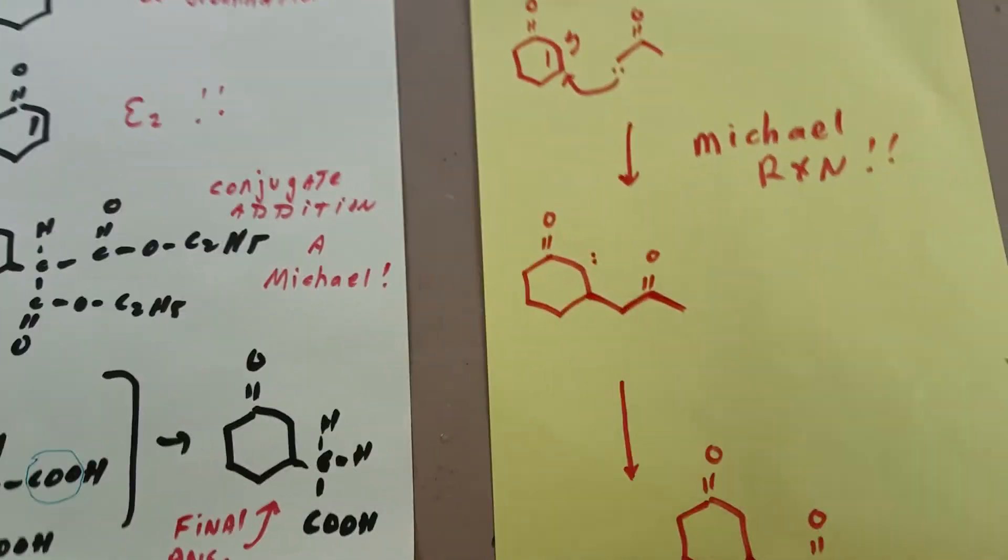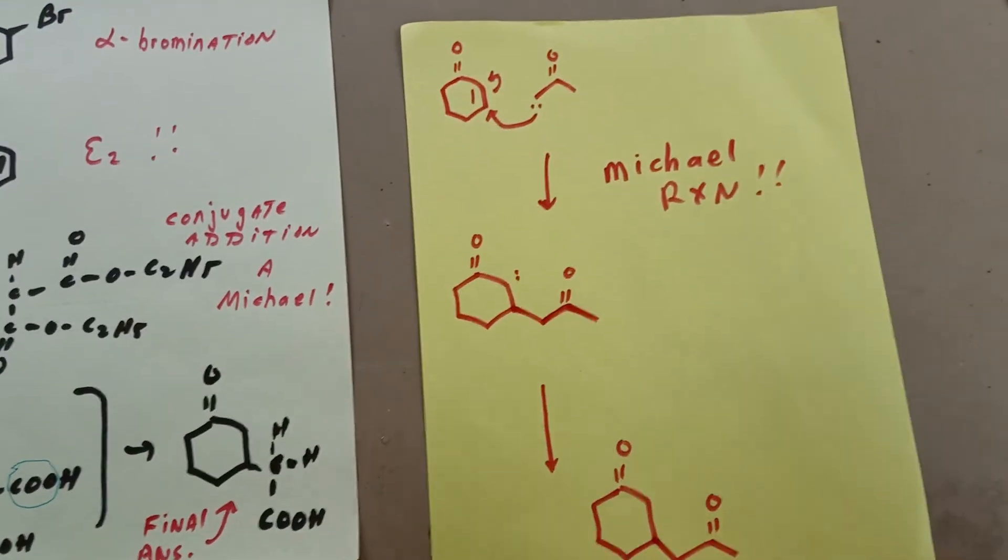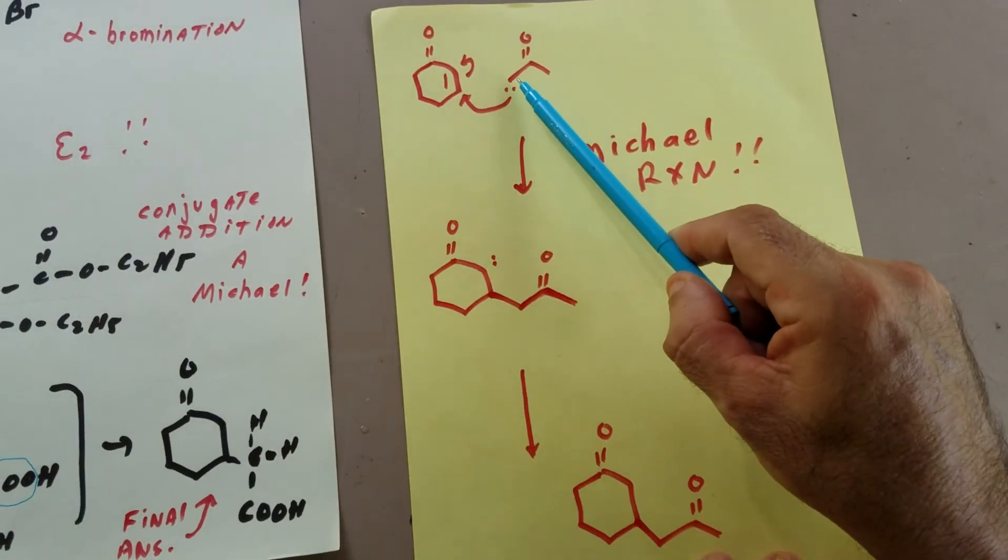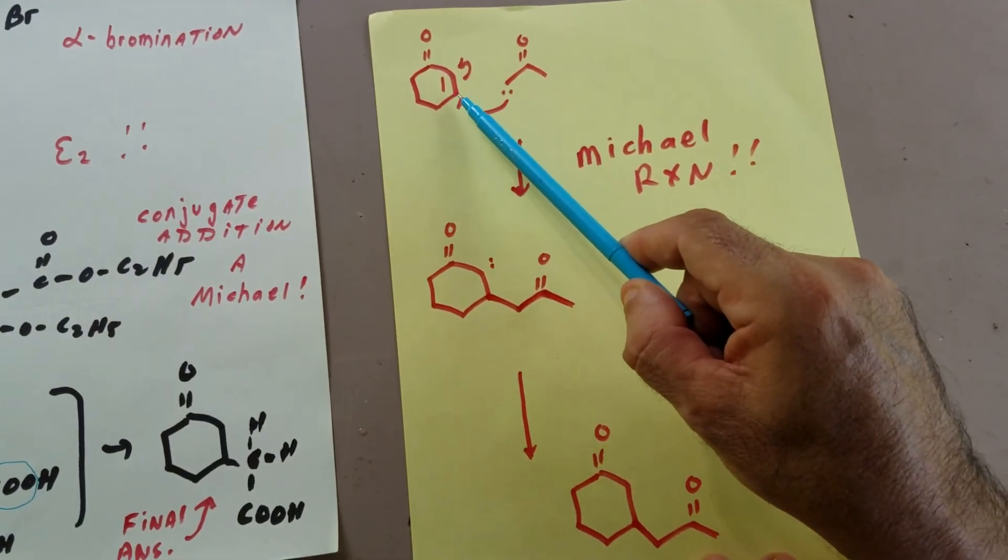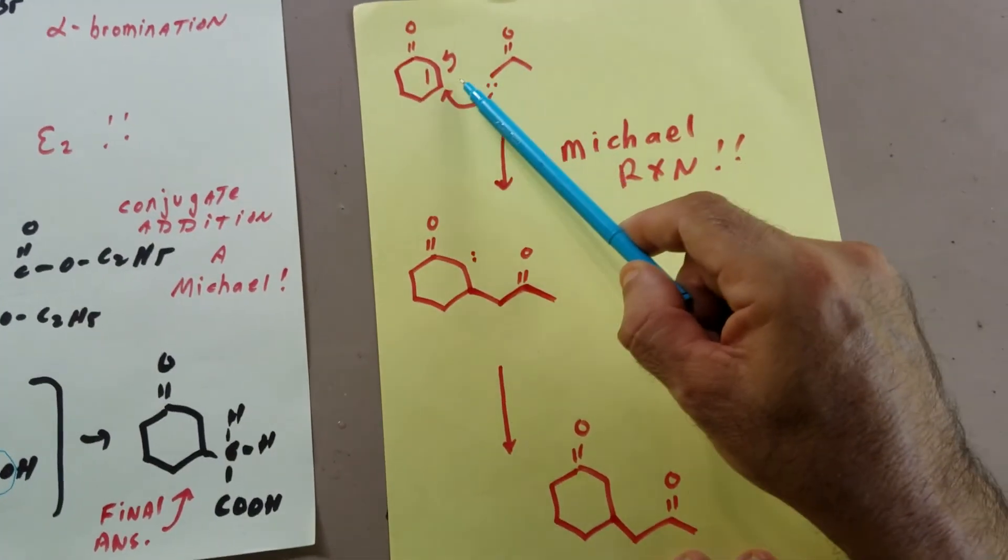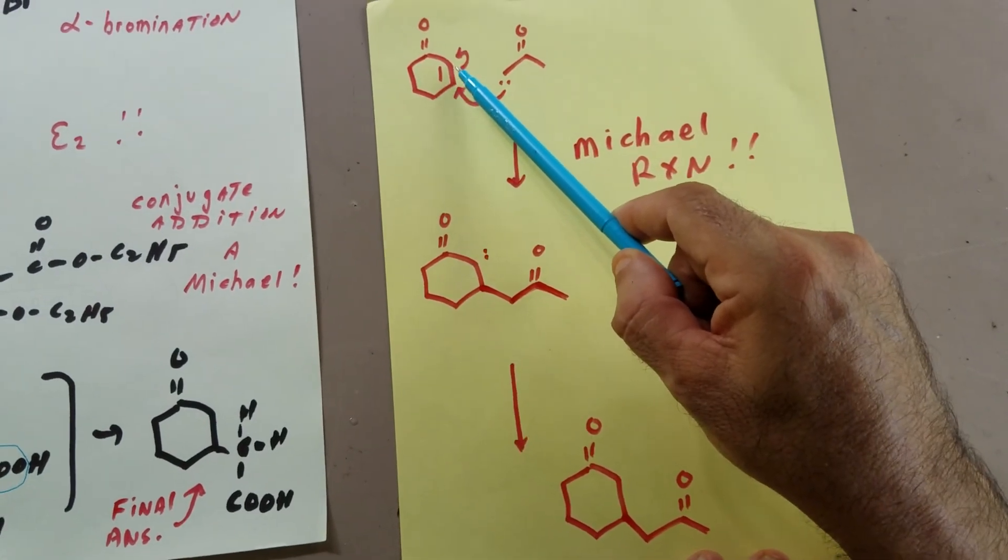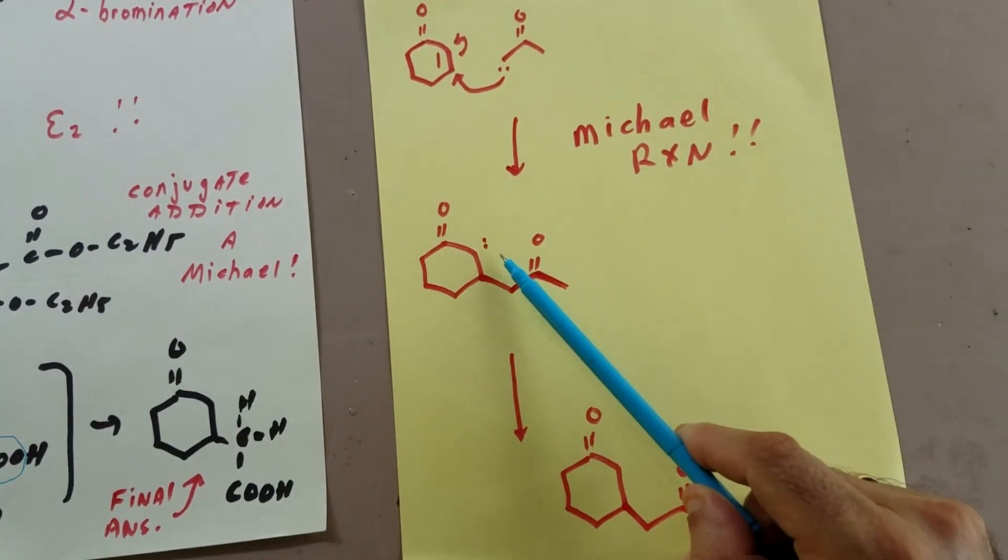what I did in—and this is just a generic Michael reaction—I show you how I attack the carbonyl or I attack the beta carbon and this moves out, and that would give me this.